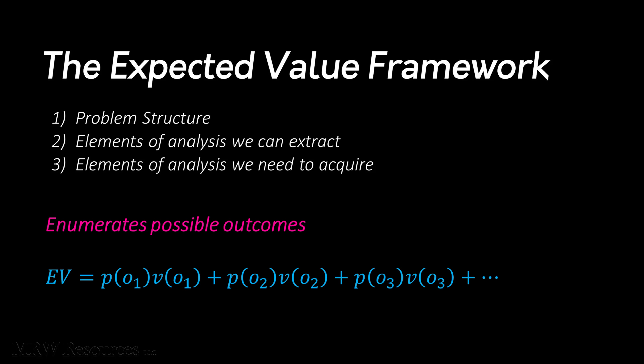So we can estimate the probabilities with the data we have available. But in order to determine what the value of that outcome is, we'll likely need to acquire the values for each potential outcome, the costs and the benefits, from other sources. So that's our third consideration we just talked about.